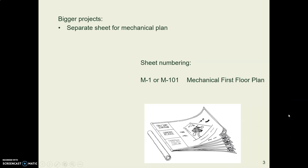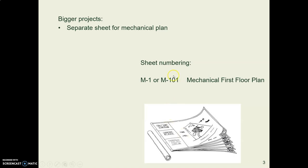If you have a bigger house or a bigger HVAC system, you might decide that you need a separate sheet for HVAC. HVAC comes under the category of mechanical — HVAC is a kind of mechanical system — so our sheet name starts with an M for mechanical if we have a separate HVAC drawing. It'll be M101, for example.